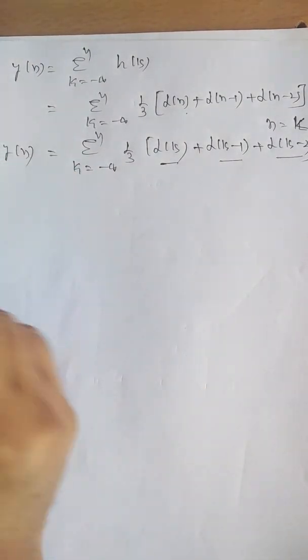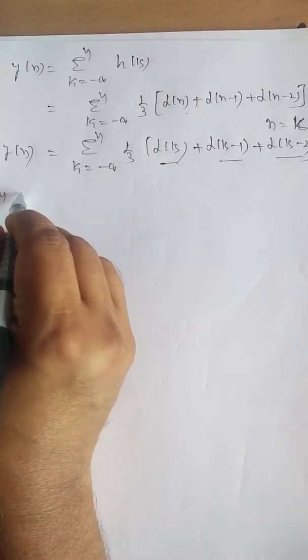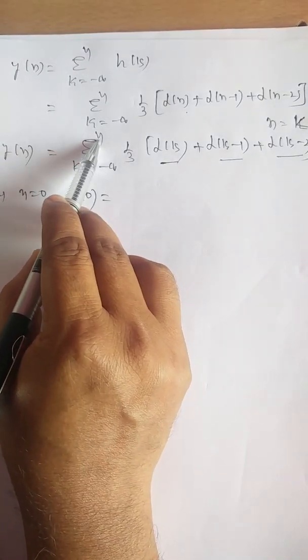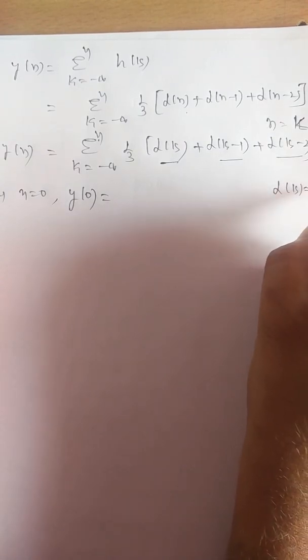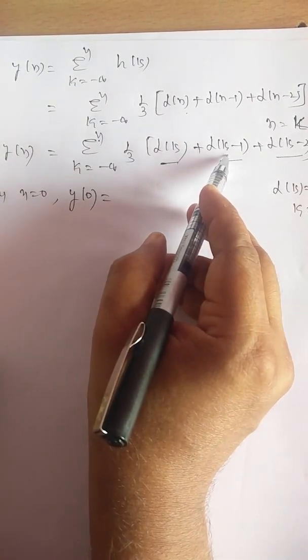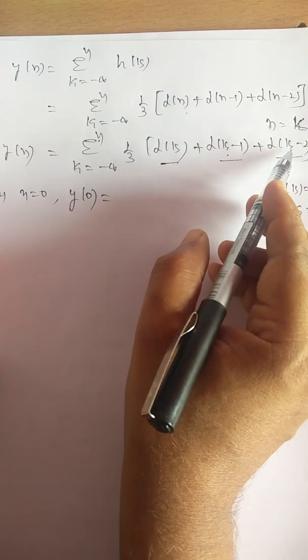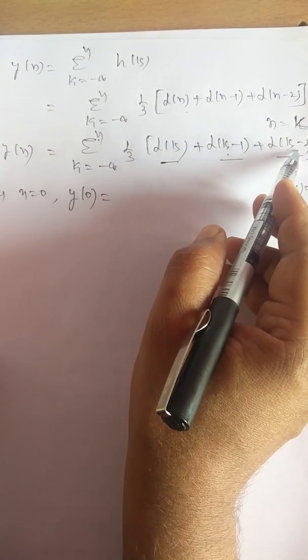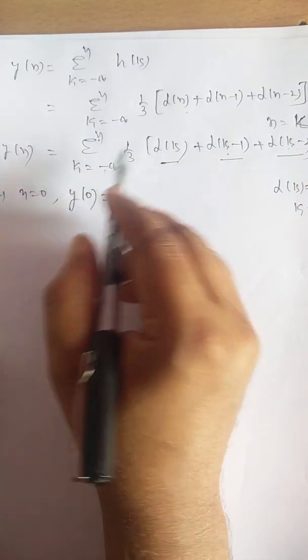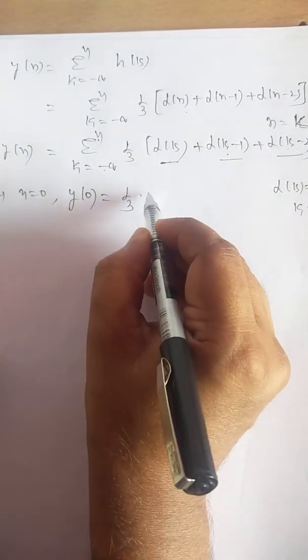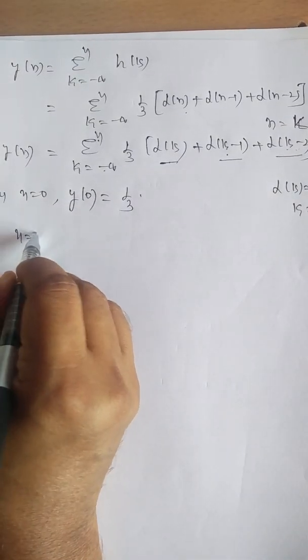So y[0] = (1/3)·1 = 1/3. When n = 1, y[1] = summation k from minus infinity to 1 of (1/3)[δ[k] + δ[k−1] + δ[k−2]]. The answer exists only at k = 0 and k = 1: δ[0] = 1 and δ[k−1] at k=1 = 1, so y[1] = (1/3)(1 + 1) = 2/3.